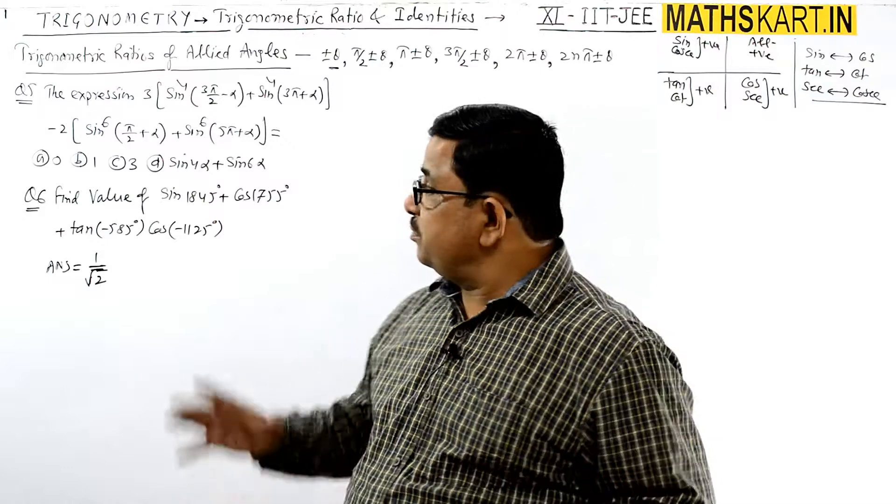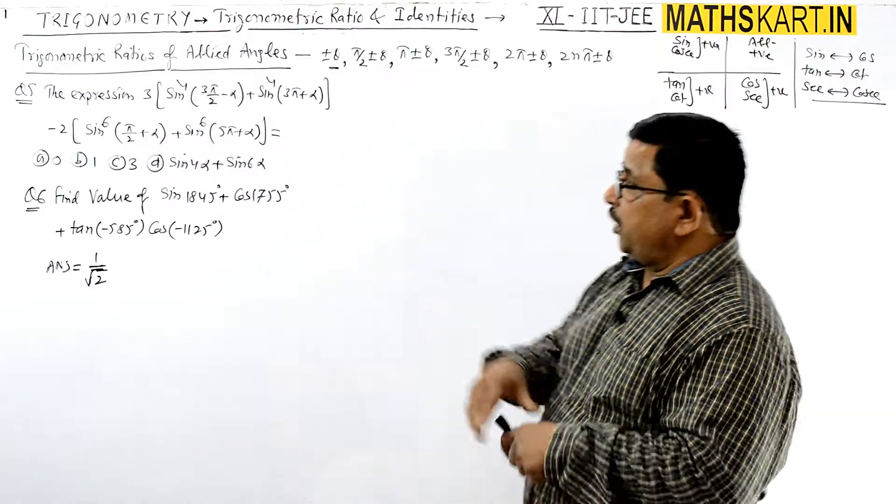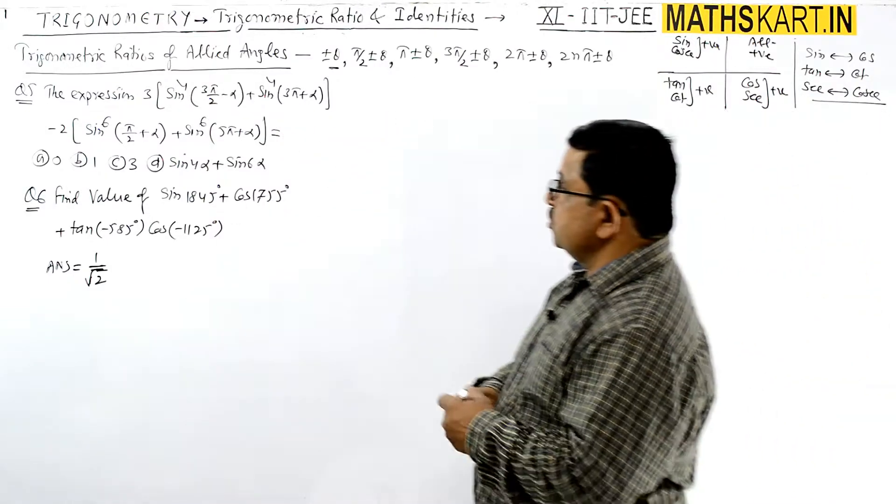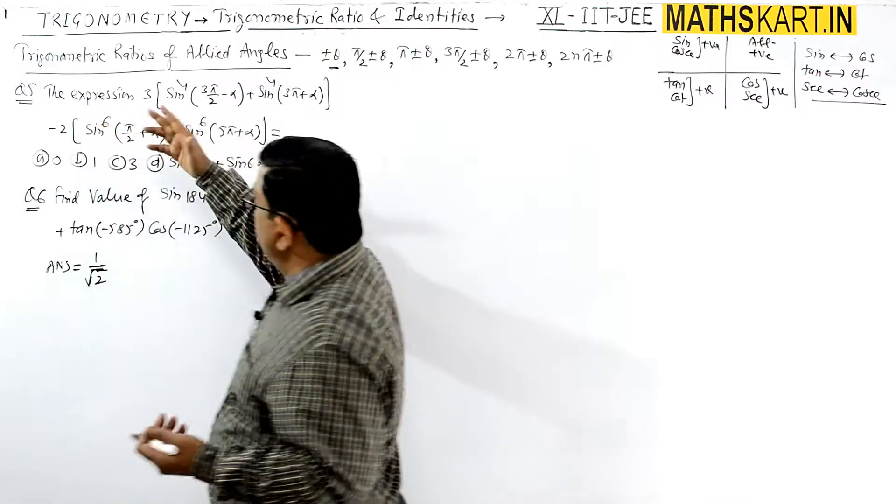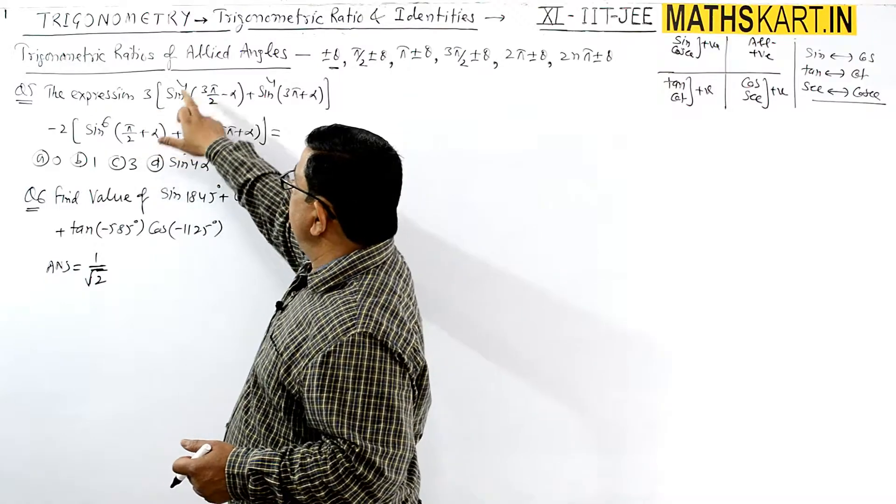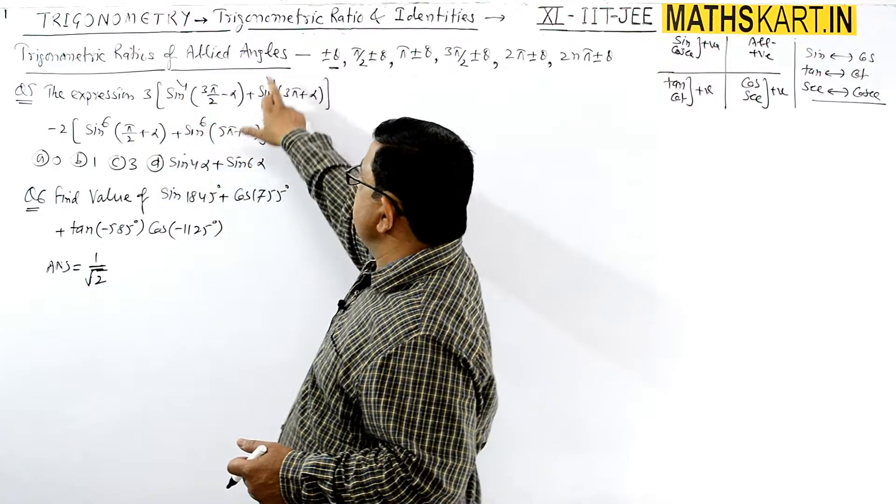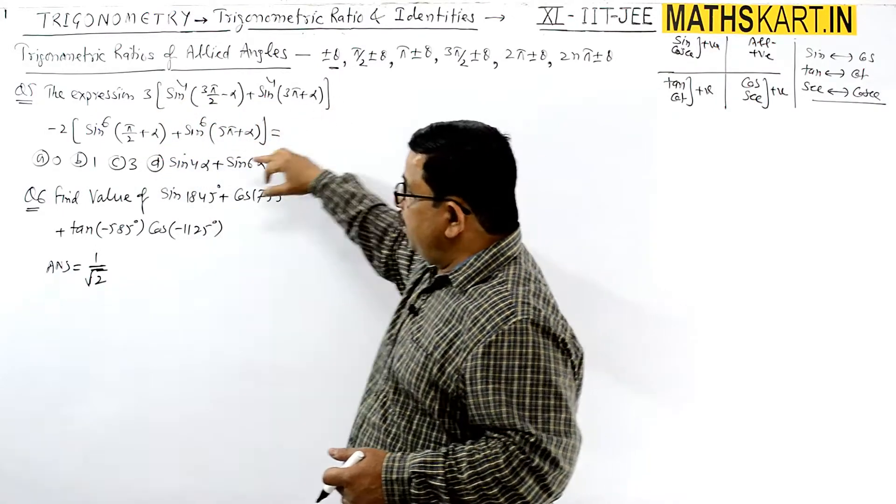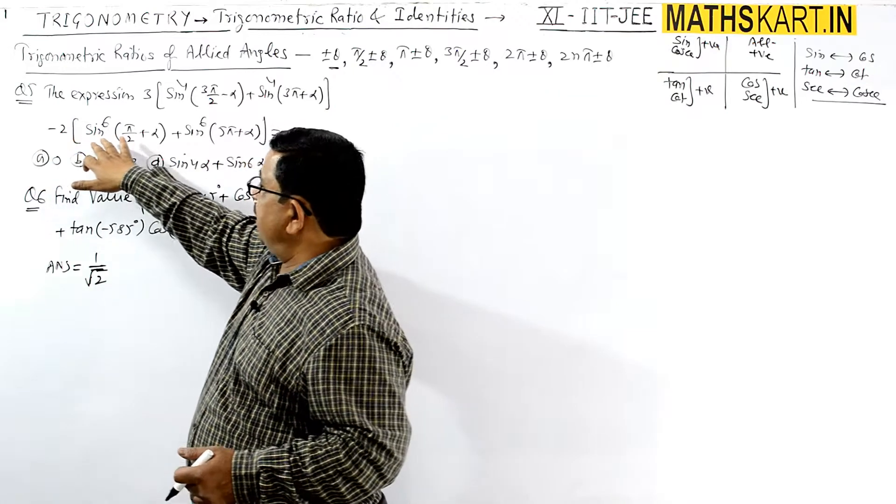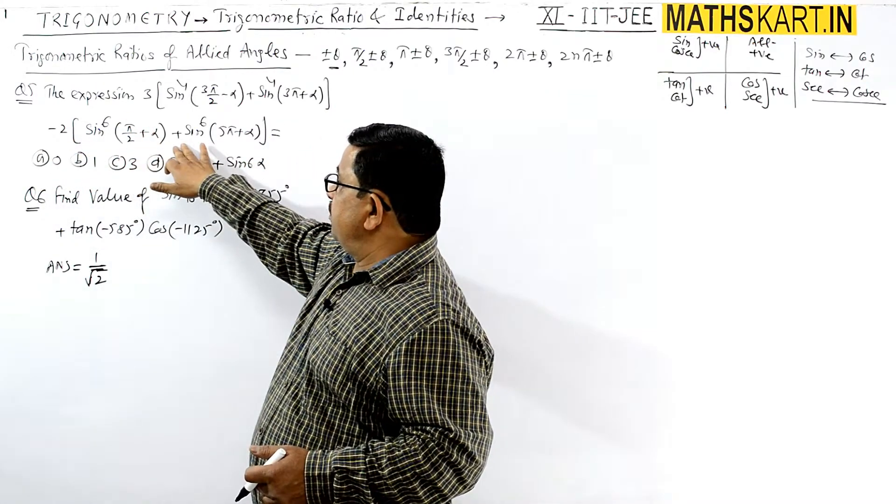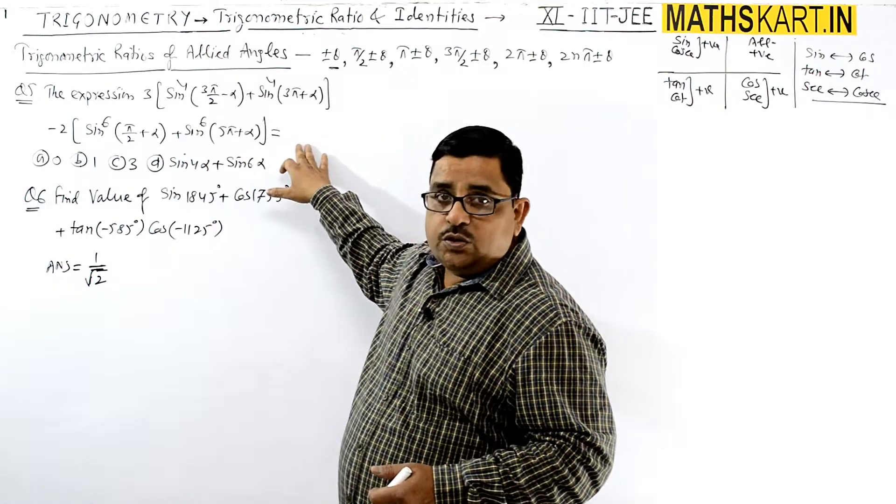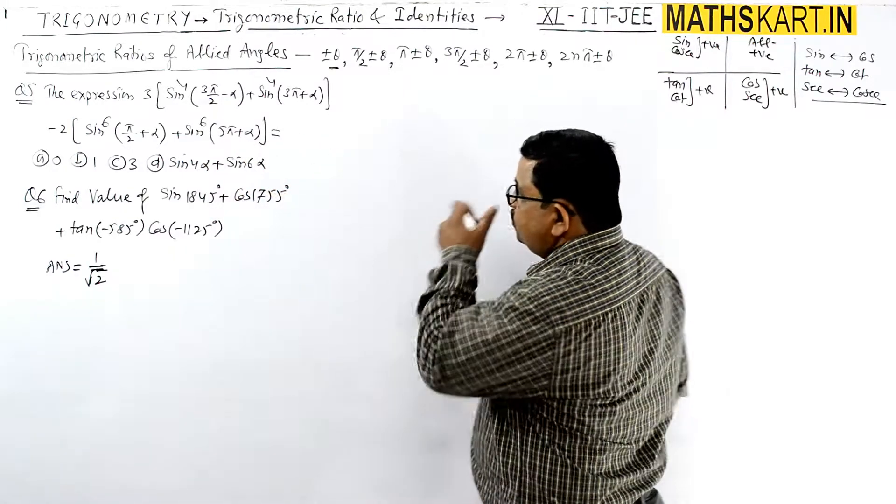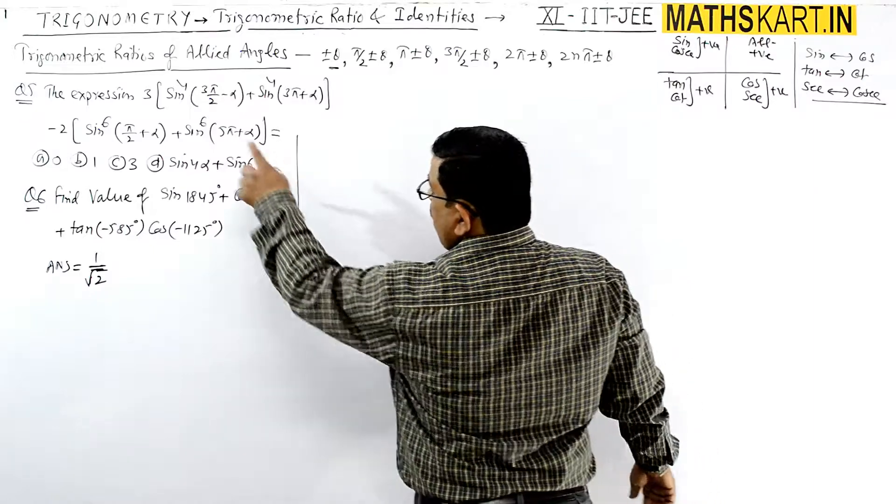Two more different questions based on quadrant system. Question number five or six, two questions already last. The expression given is 3 sin^4(3π/2 - α) plus sin^4(3π + α) into -2 times sin^6(π/2 + α) plus sin^6(π + α) equals to value nikali. So how we come here, what we have to do.